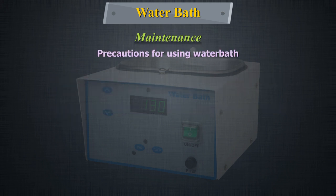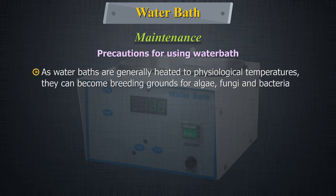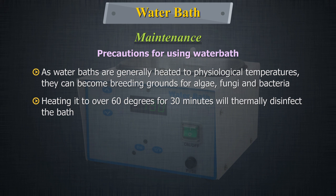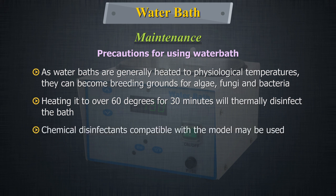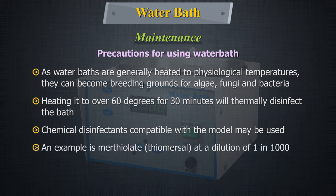As water baths are generally heated to physiological temperatures, they can become breeding grounds for algae, fungi and bacteria. Heating it to over 60°C for 30 minutes will thermally disinfect the bath. Alternatively, chemical disinfectants compatible with the model may be used. An example is merthiolate or thiomersal at a dilution of 1 in 1000.